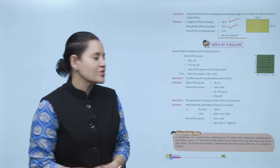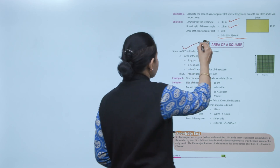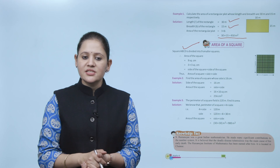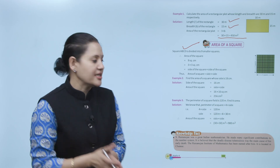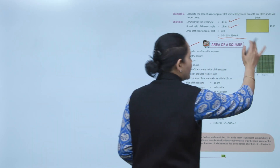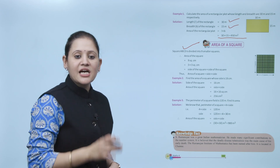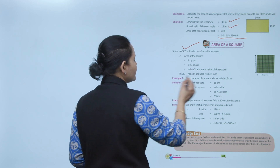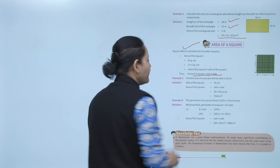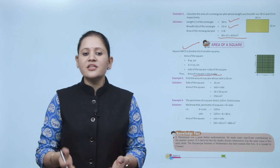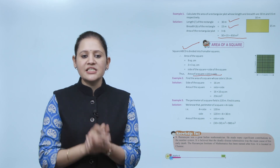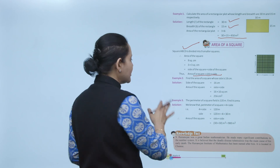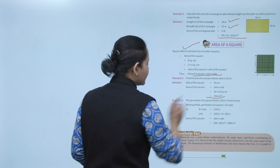Next is area of a square. Square ABCD is divided into 9 smaller squares, so area equals 9 square centimeters, which is 3 into 3 — meaning side multiplied by side. Area of square equals side into side. Example: find the area of a square whose sides are 16 centimeters. Area equals 16 into 16, which is 256 centimeter square.